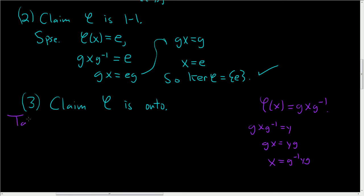So take any little y in G. Then the element, which we'll call x, g⁻¹yg, is also in G, because G is closed under multiplication and under inverses, etc.